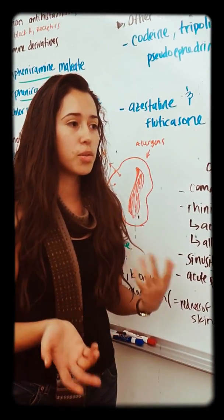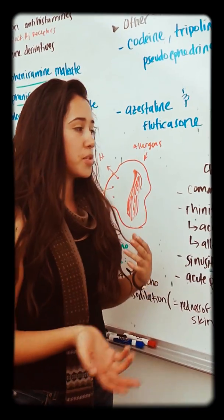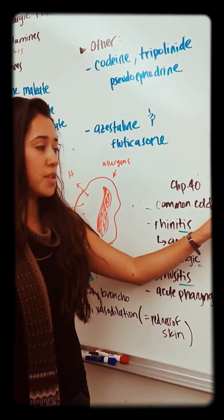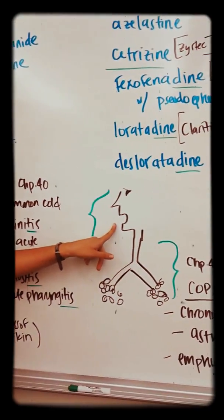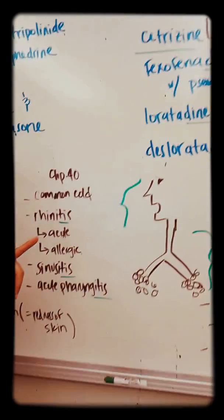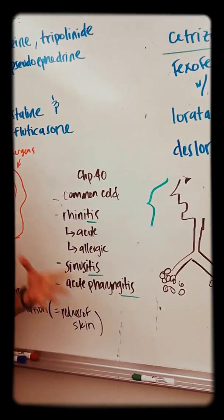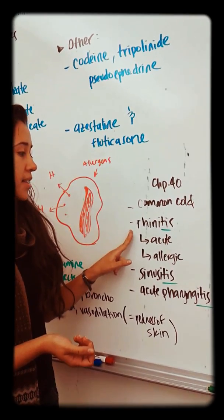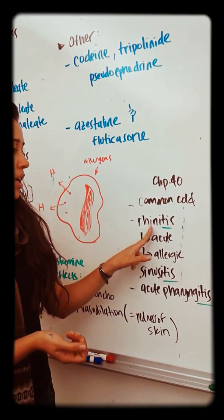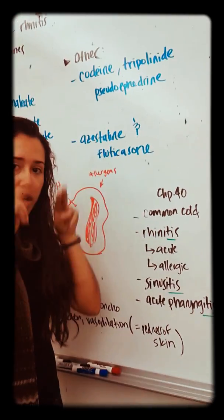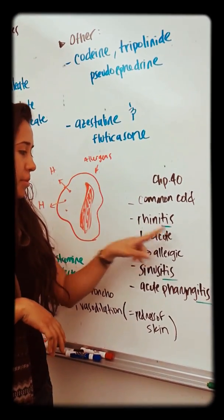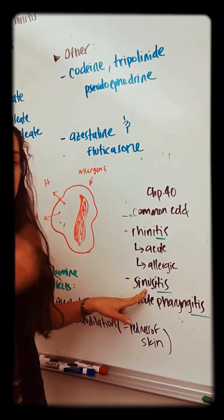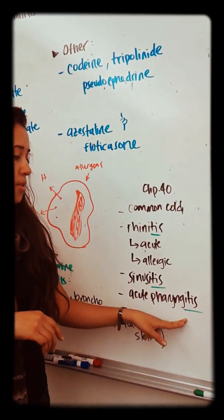We're going over the respiratory system, covering chapters 40 and 41. Chapter 40 deals with the upper respiratory system — your nose, ears, throat, and sinuses. A lot of the drugs we're prescribing are for the common cold, rhinitis — which means inflammation of the nose — and sinusitis, which is inflammation of the sinuses, and acute pharyngitis.